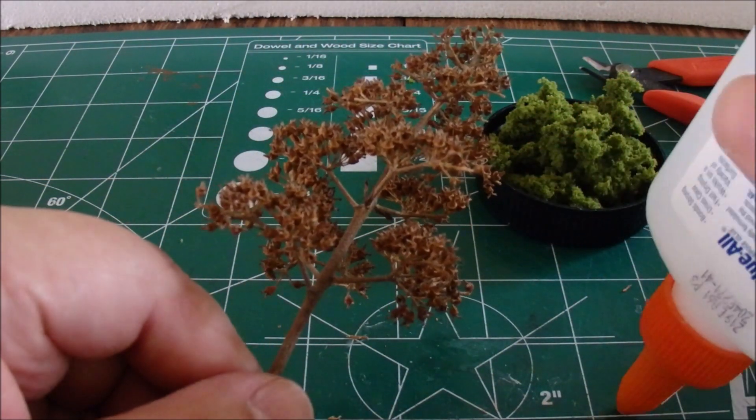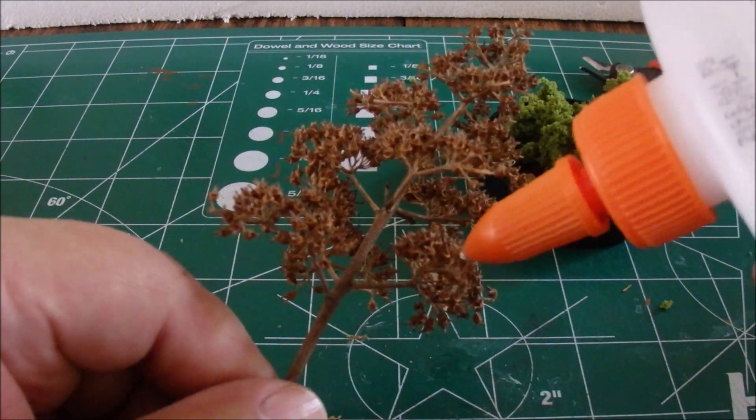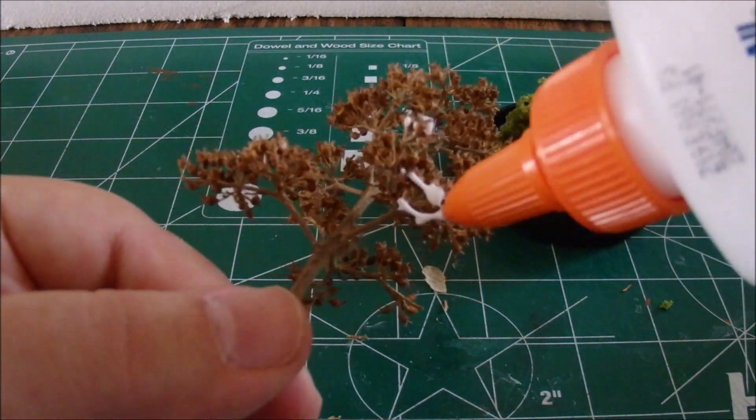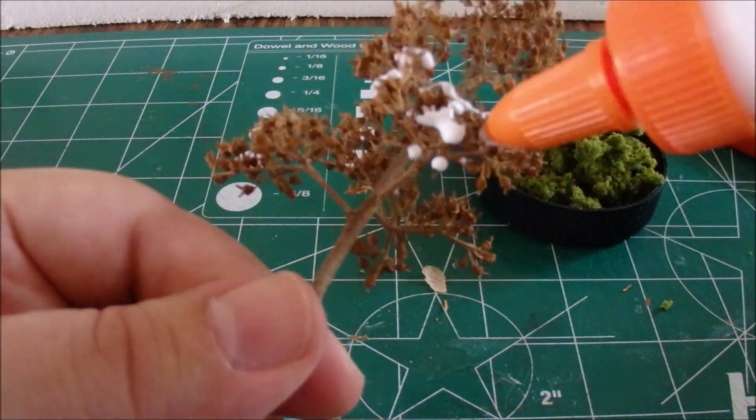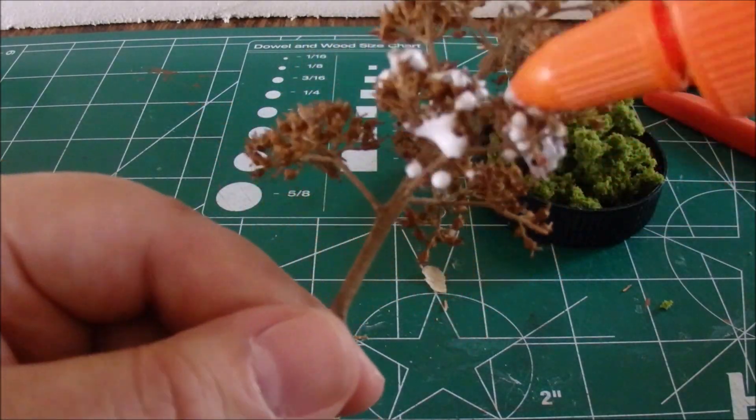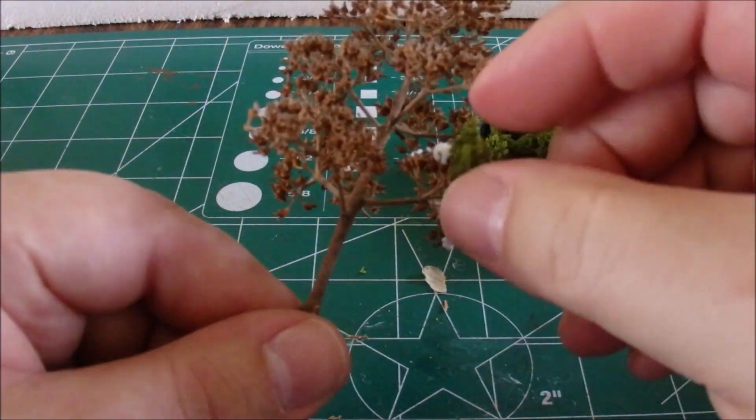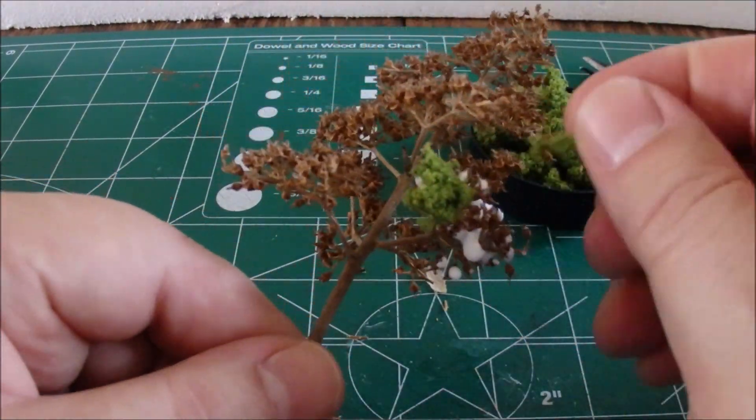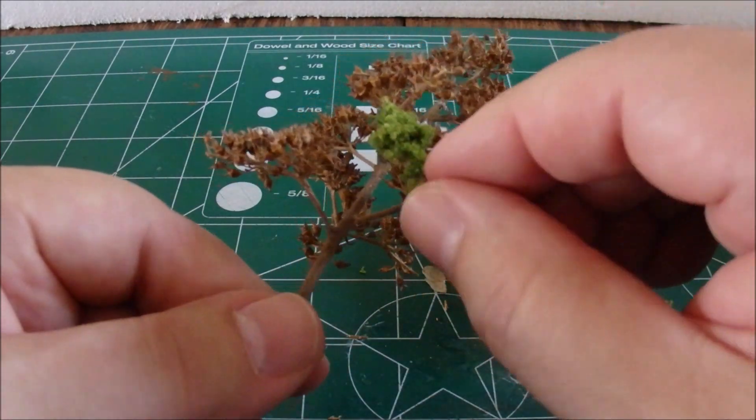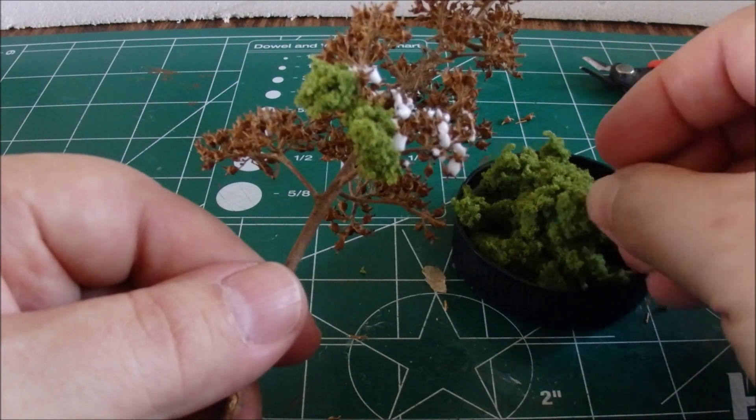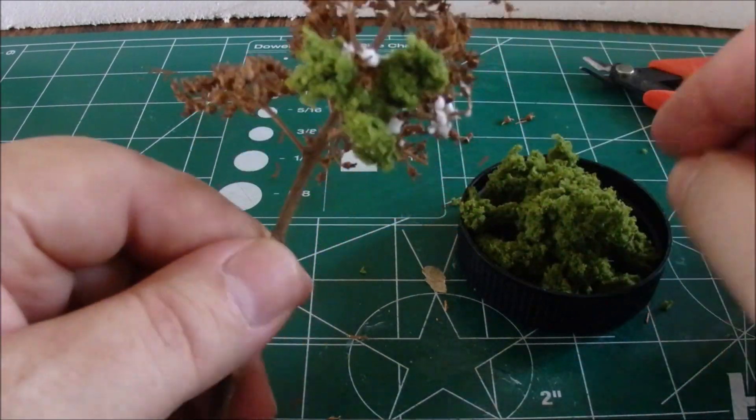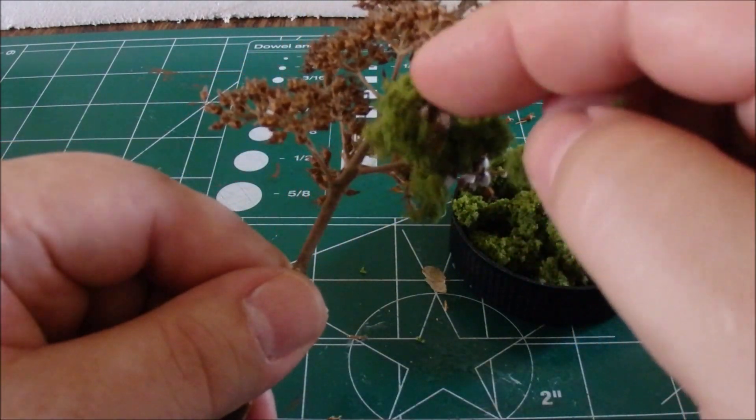Just grab the glue bottle straight out and start blobbing it onto the branches there. I thought about thinning down the glue and maybe using a paintbrush to paint on the glue, but this seemed to work pretty well because the clumps help to cover a lot of area on the tree. Just grab the clump foliage and stick it on, trying to fill up wherever I see any bare spots there.